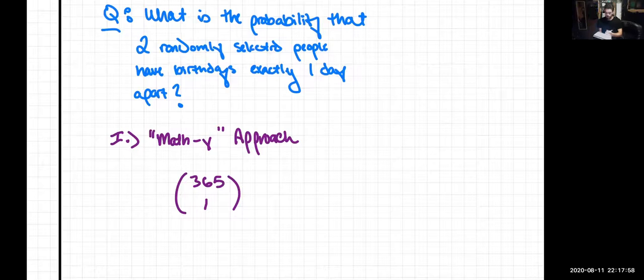Then we have to answer the question, what is their respective probability of having their birthday on some given day? Well, that probability is just one day out of 365, so that is one out of 365.